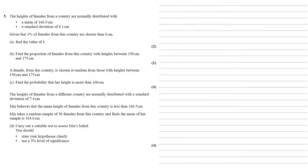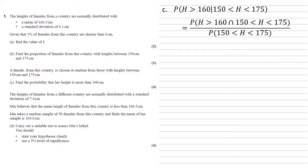A female from this country is chosen at random from those with heights between 150 centimeters and 175 centimeters. For part C, we need to find the probability that her height is more than 160 centimeters. So we're looking for the probability that H is larger than 160, given that we're already choosing from between 150 and 175. Using our normal formulae for probability, this is going to be equal to the probability of the intersect of H larger than 160 and H between 150 and 175, divided by the probability of H being between 150 and 175.